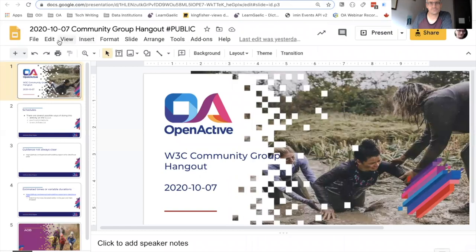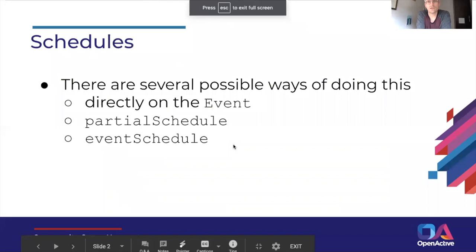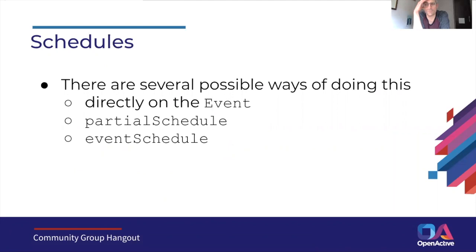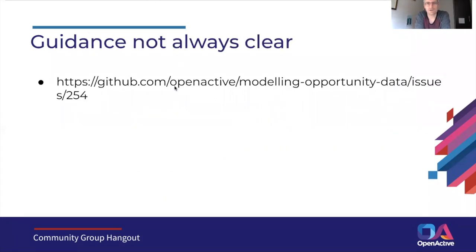The main pointed issue is just there seem to be a lot of ways of doing this. You can have startDate and endDate on the event itself, you can have a partialSchedule, you can have an eventSchedule. This is already a lot of variation and then it seems the guidance in the spec is not terribly helpful.